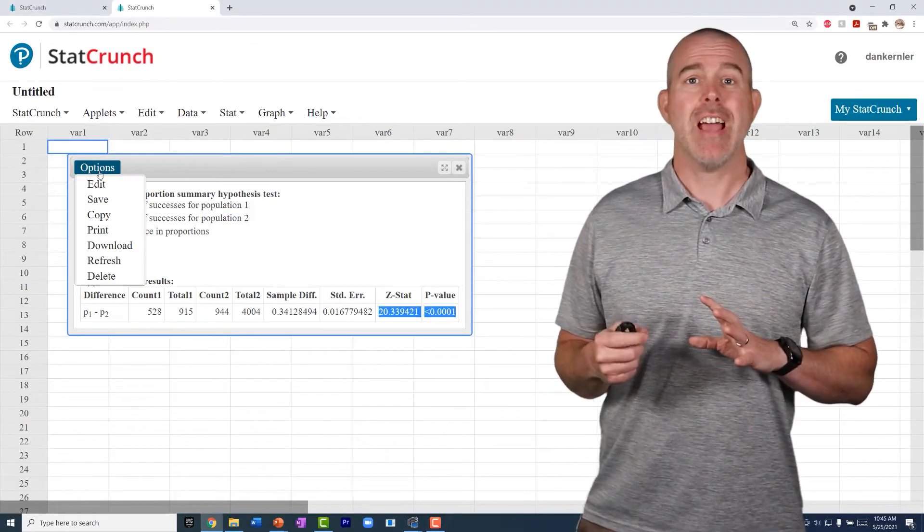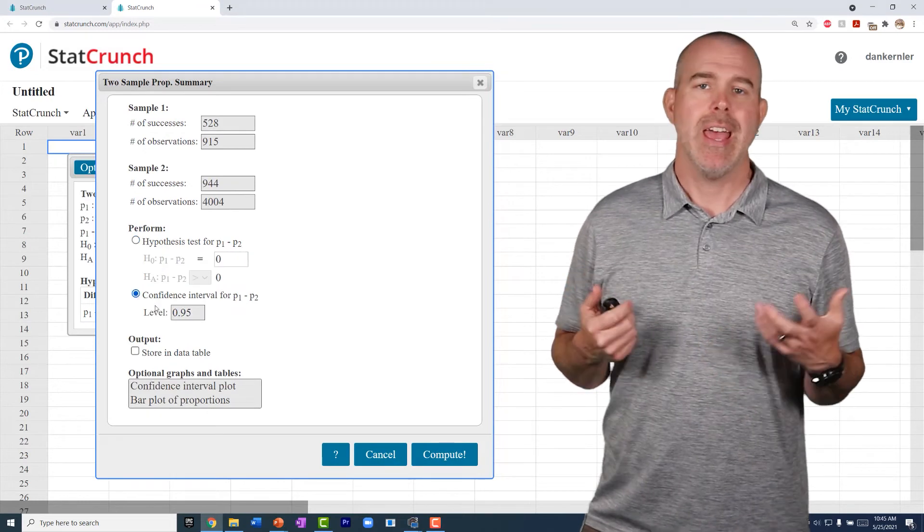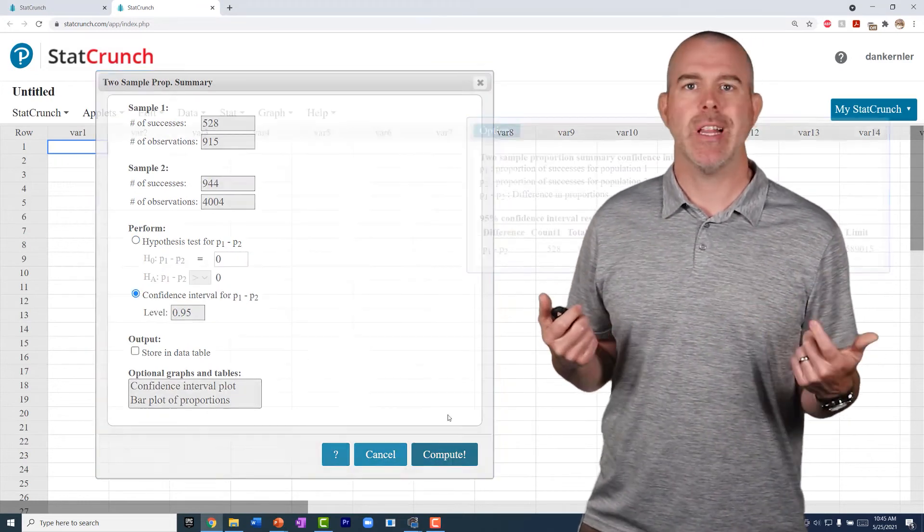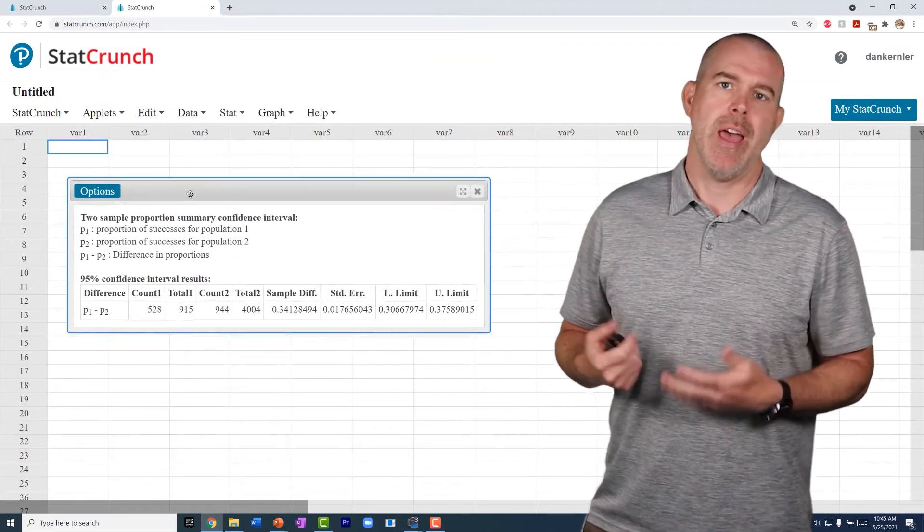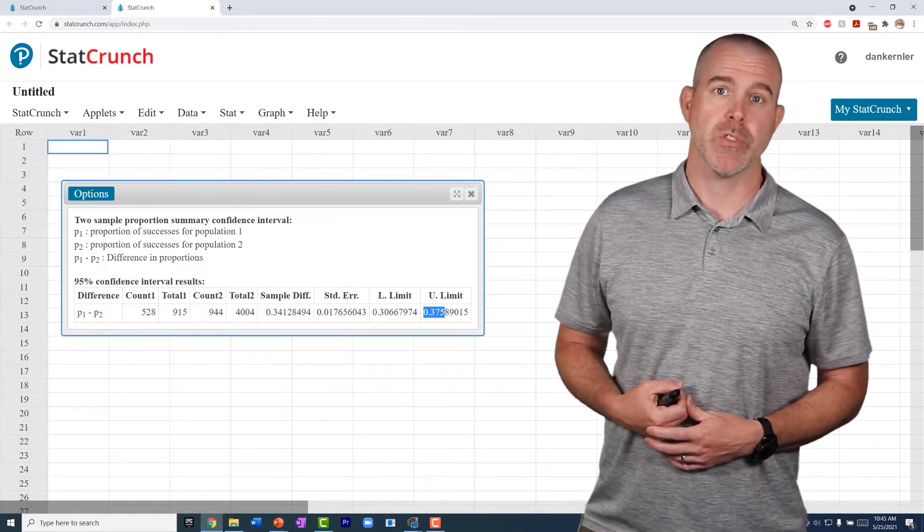So in StatCrunch, it's actually that same menu, we can leave our results and just go options edit. And instead of a hypothesis test, just click confidence interval, hit compute, and then you get your lower and upper limits for the difference between the proportions.